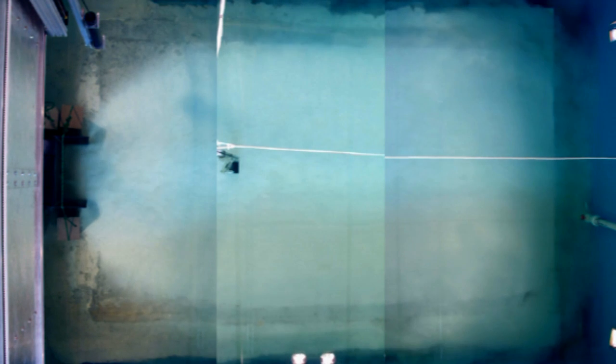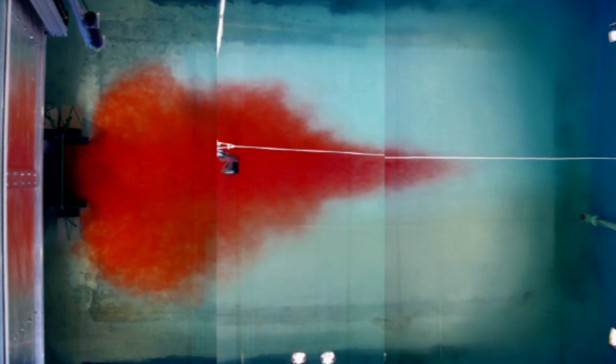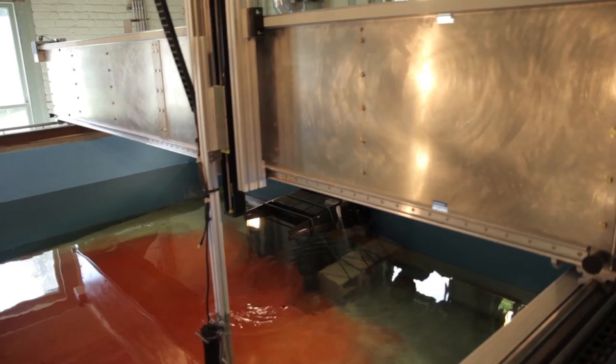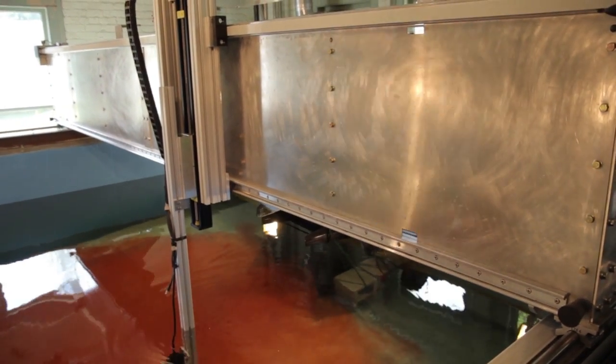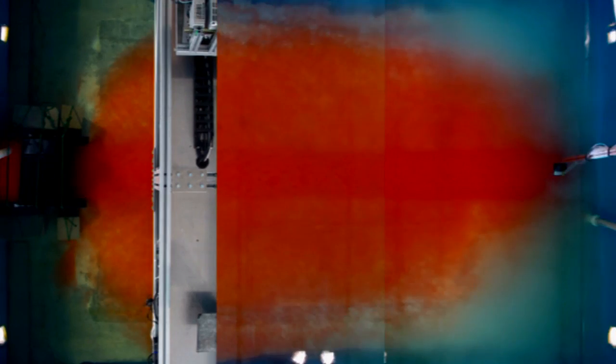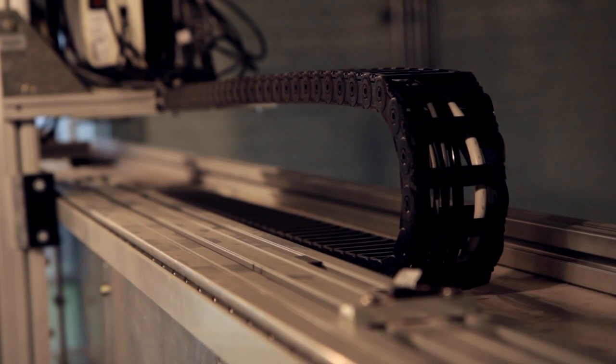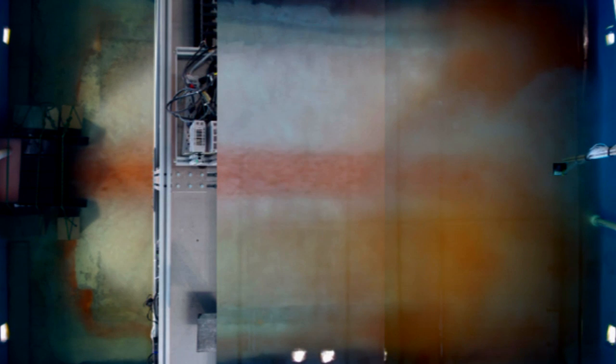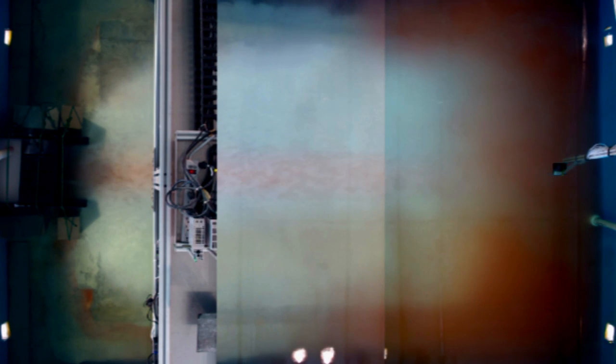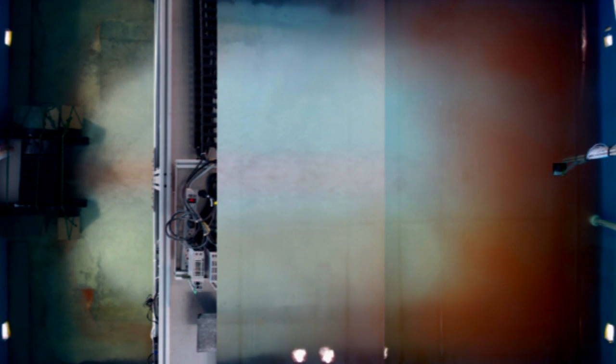While the experiment's going on, the types of information we're able to collect have to do with things like the velocity at which the currents are going. We also have instrumentation that allows us to measure the concentration of sediment at different locations within the flow. We inject dye into the flow so that we can do overhead photography and figure out from that photography what's going on with the flow.